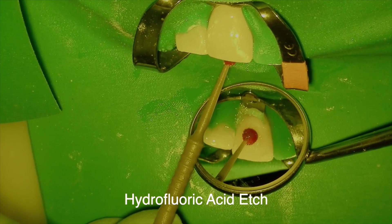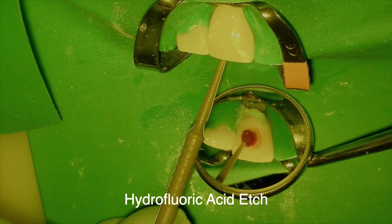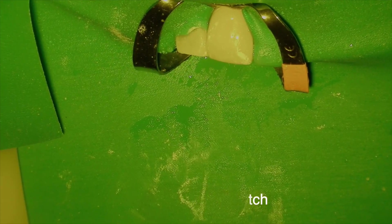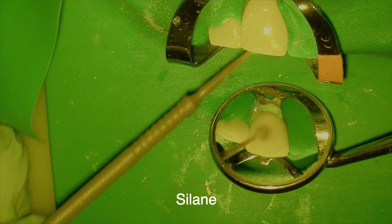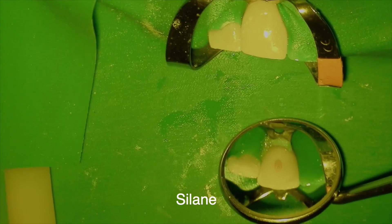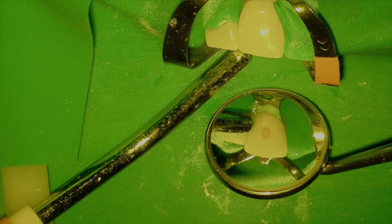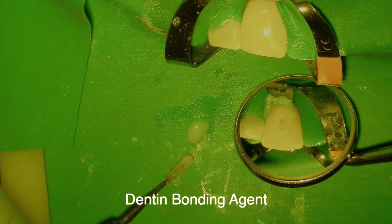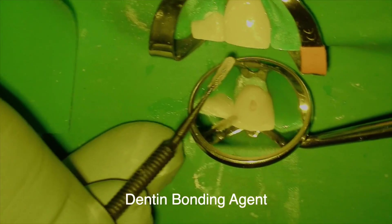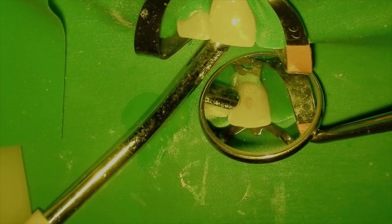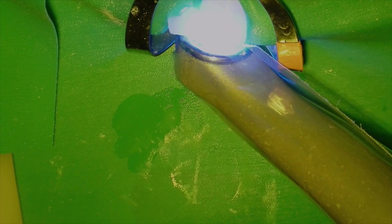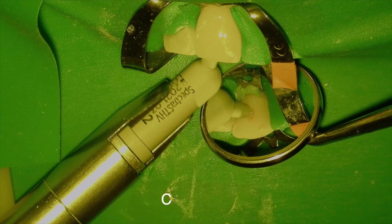Next, we need to etch the porcelain. So I'm going to use hydrofluoric acid. So I'm going to rinse off the hydrofluoric acid, and then I'm going to place a silane. And what this does is it allows us to bond to the porcelain crown itself. And after drying the silane, then we place our dentin bonding agent, which now bonds to the silane and our existing composite restoration. And we're going to gently blow dry the adhesive, and then we're going to light cure it.